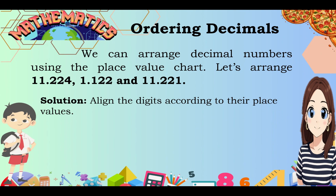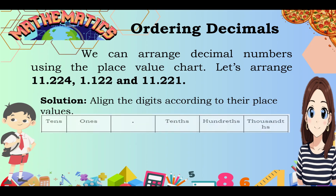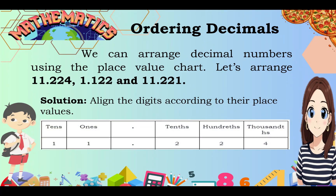Ordering decimals: we can arrange decimal numbers using the place value chart. Let's arrange 11 and 224 thousandths, 1 and 122 thousandths, and 11 and 221 thousandths. Our solution: let's align the digits according to their place values. For the first number, to the left of the decimal point we have 11, and to the right we have 2 tenths, 2 hundredths, and 4 thousandths.